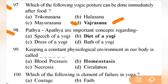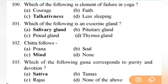Pathya and Apathya are important concepts regarding diet of a yogi. Next: keeping a constant physiological environment in our body is called homeostasis — important question. Next: which of the following is an element of failure in yoga? Right answer is C — talkativeness. Next: which of the following is an exocrine gland? Right answer is A — salivary gland.